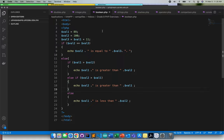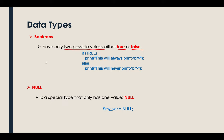So much for the boolean part — let's proceed to null. For null, basically the value is actually zero. By the word itself, null means nothing.